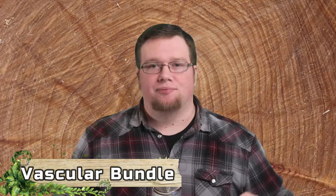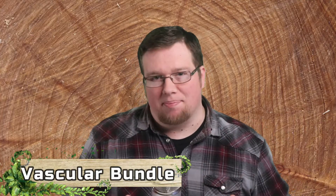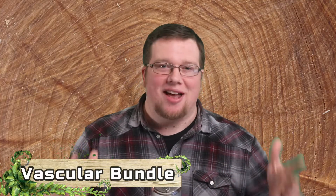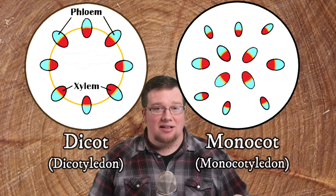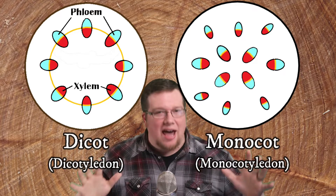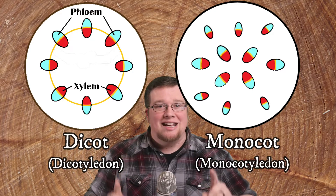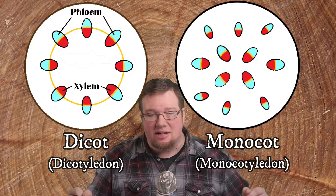Xylem and phloem are very closely associated inside a plant — they are found right next to each other and together are known as the vascular bundle. There are many of these bundles running throughout the plant's stems and leaves. In plants called monocots, these bundles are scattered about, but in dicots the bundles are found in a ring.